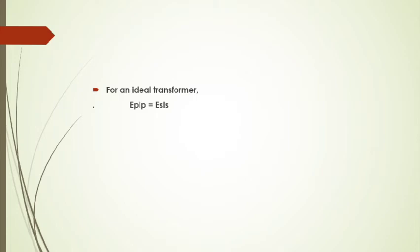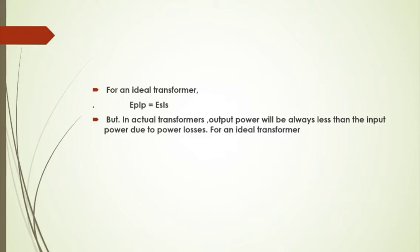The output power is equal to ES multiplied by IS. From this, IP divided by IS equals NS divided by NP, where NS and NP are the number of turns in the secondary and primary respectively.